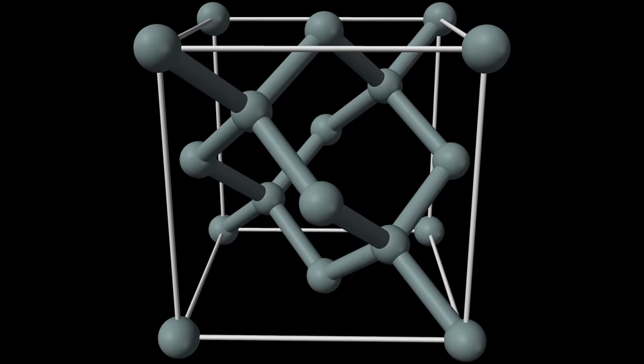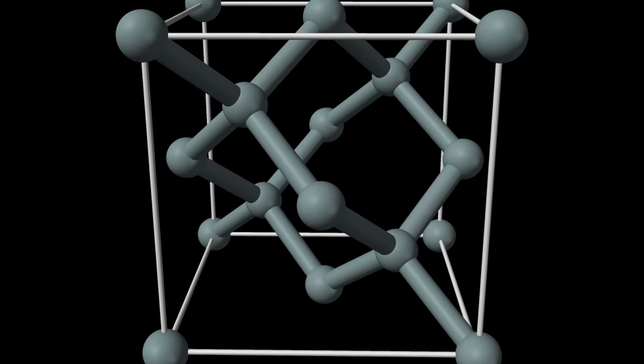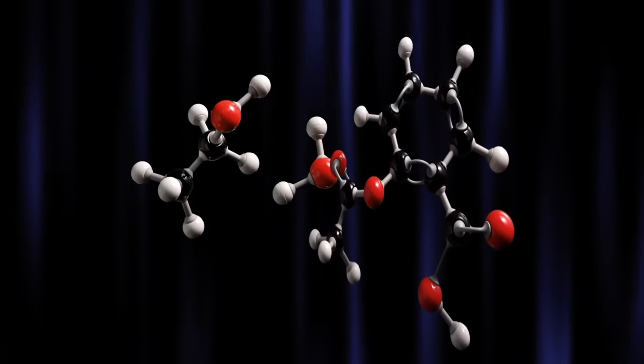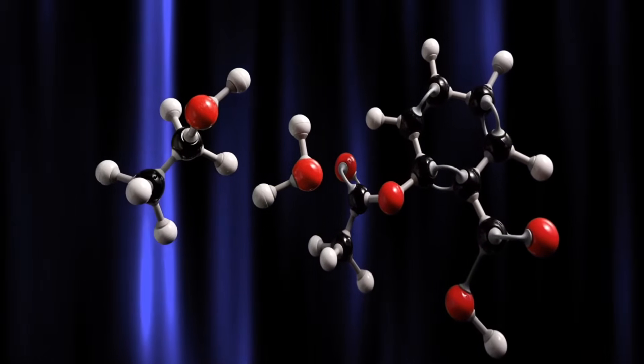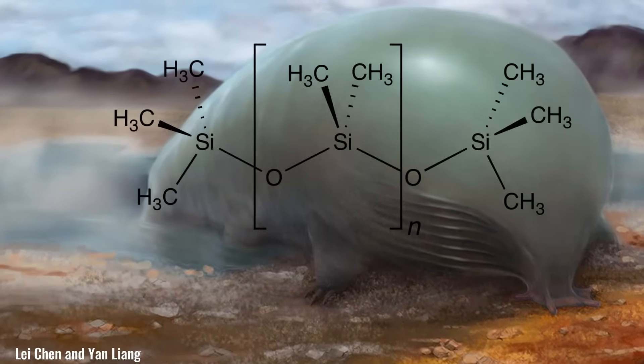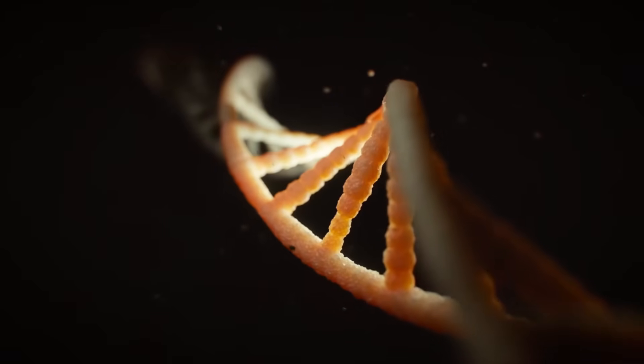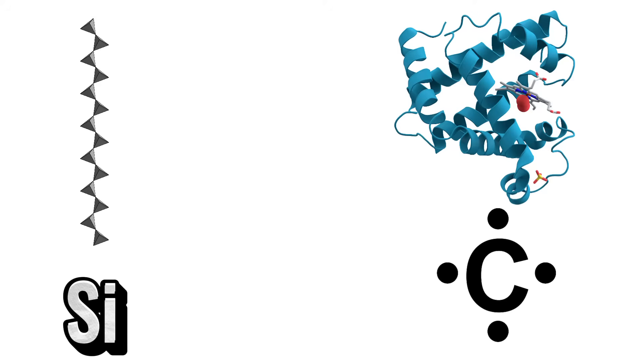In fact, silicon has the ability to form long chains and complex three-dimensional networks, similar to the carbon-based structures that form the basis of life on Earth. Silicon-based organisms might employ silicon-oxygen polymers as their equivalent of DNA and RNA, and silicate minerals could play roles analogous to carbohydrates and proteins in carbon-based life.